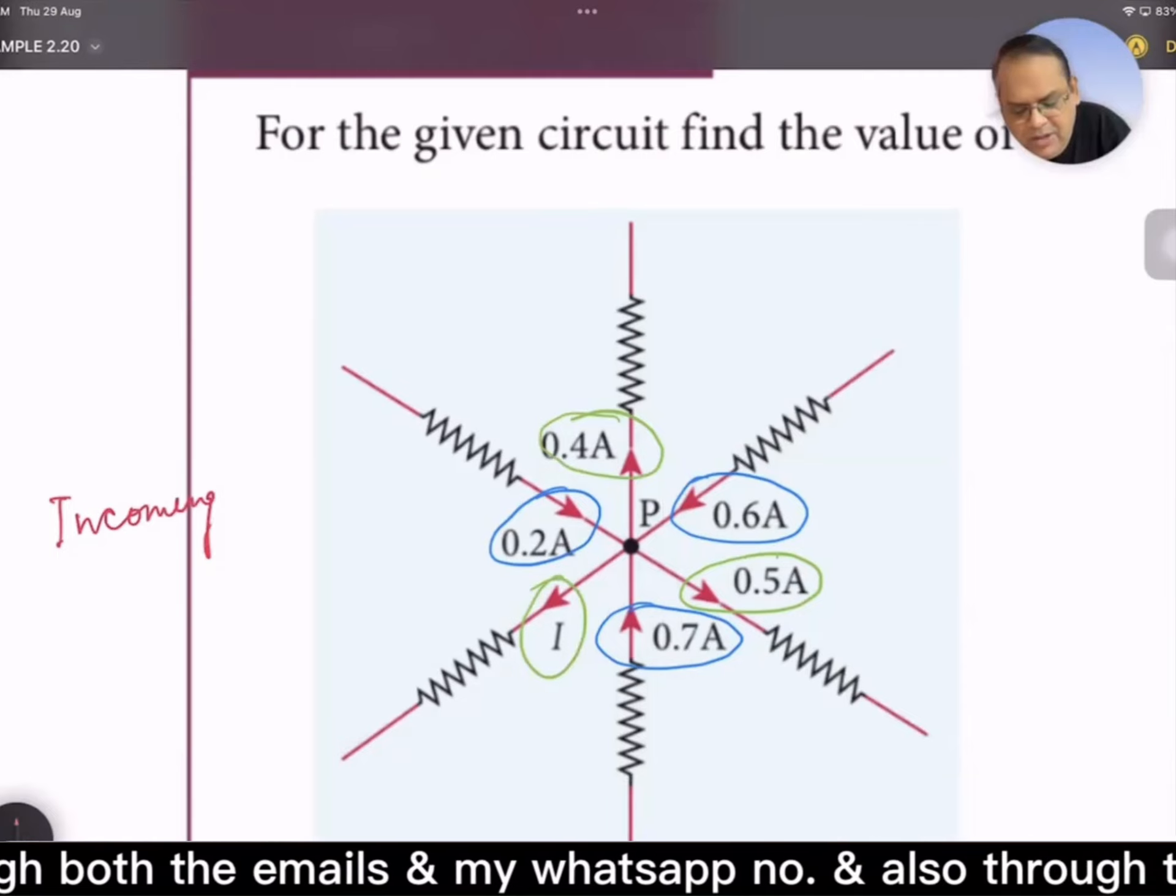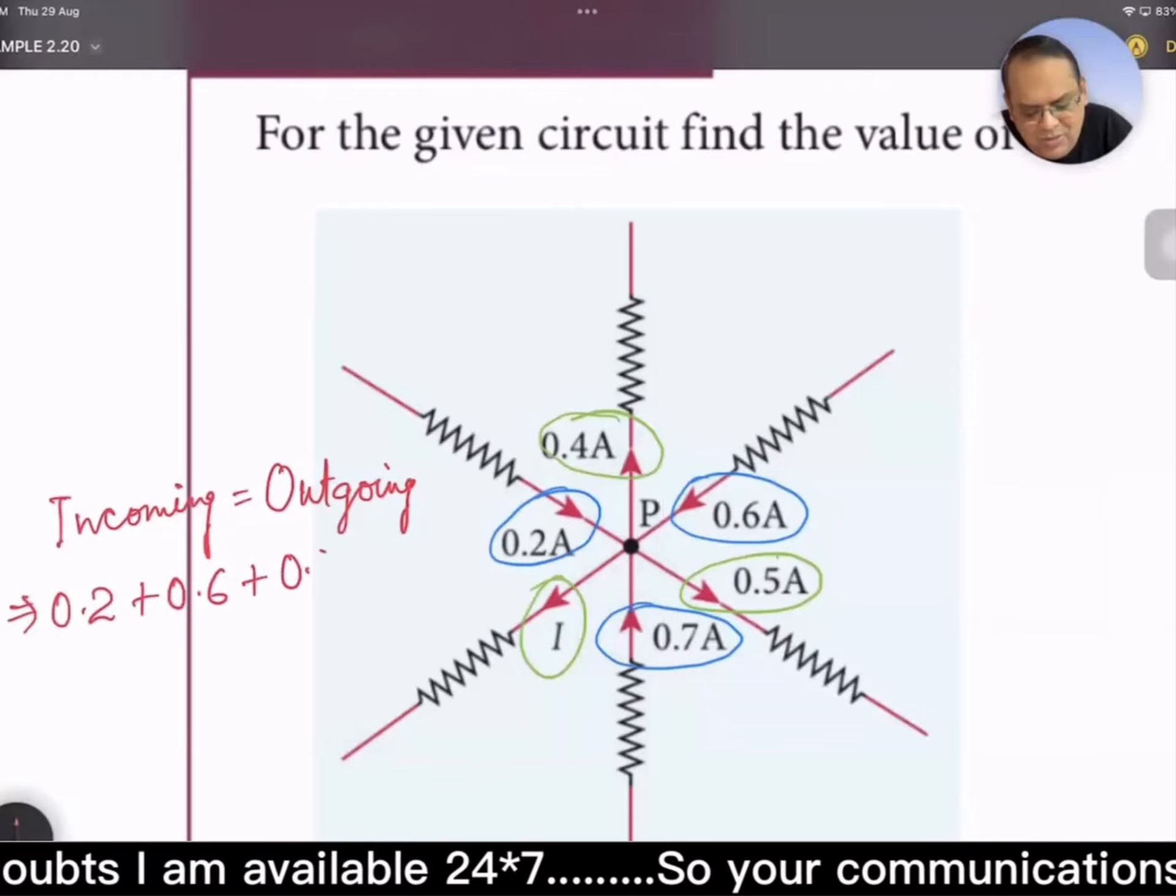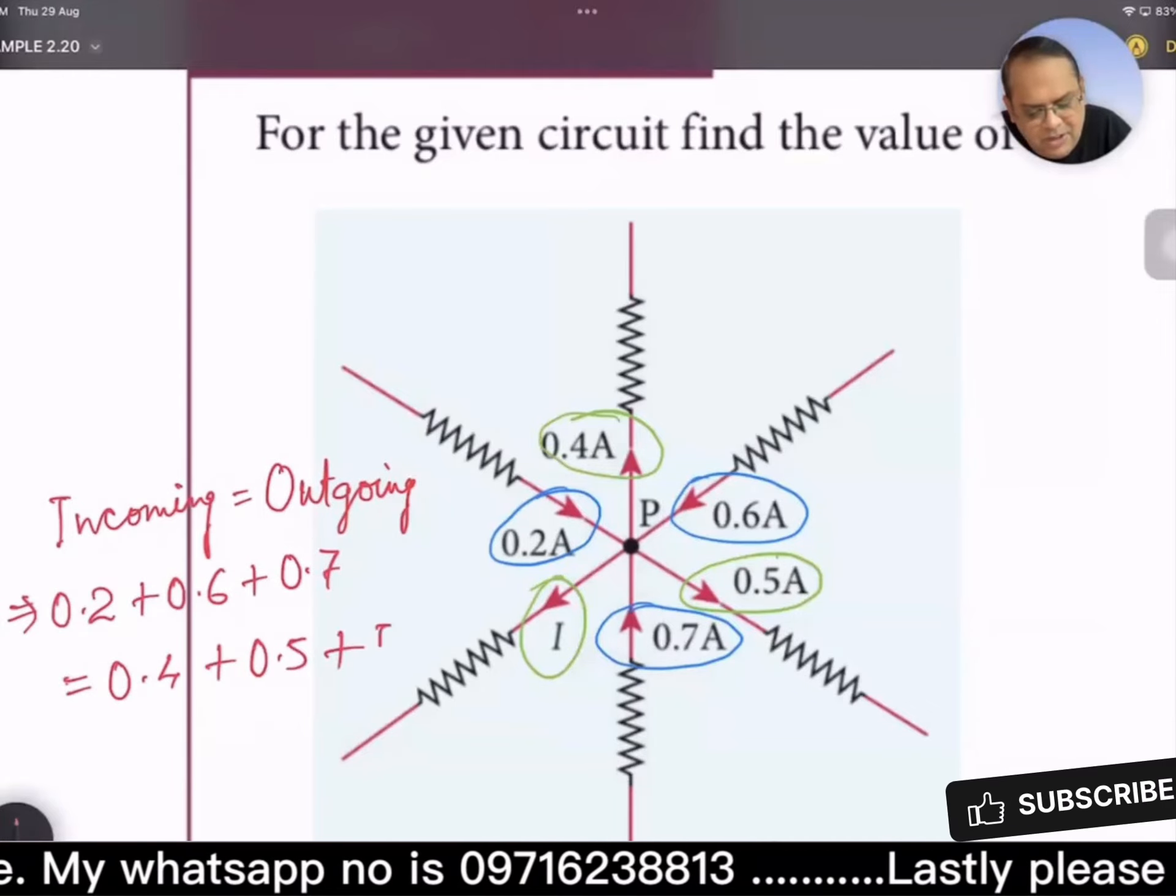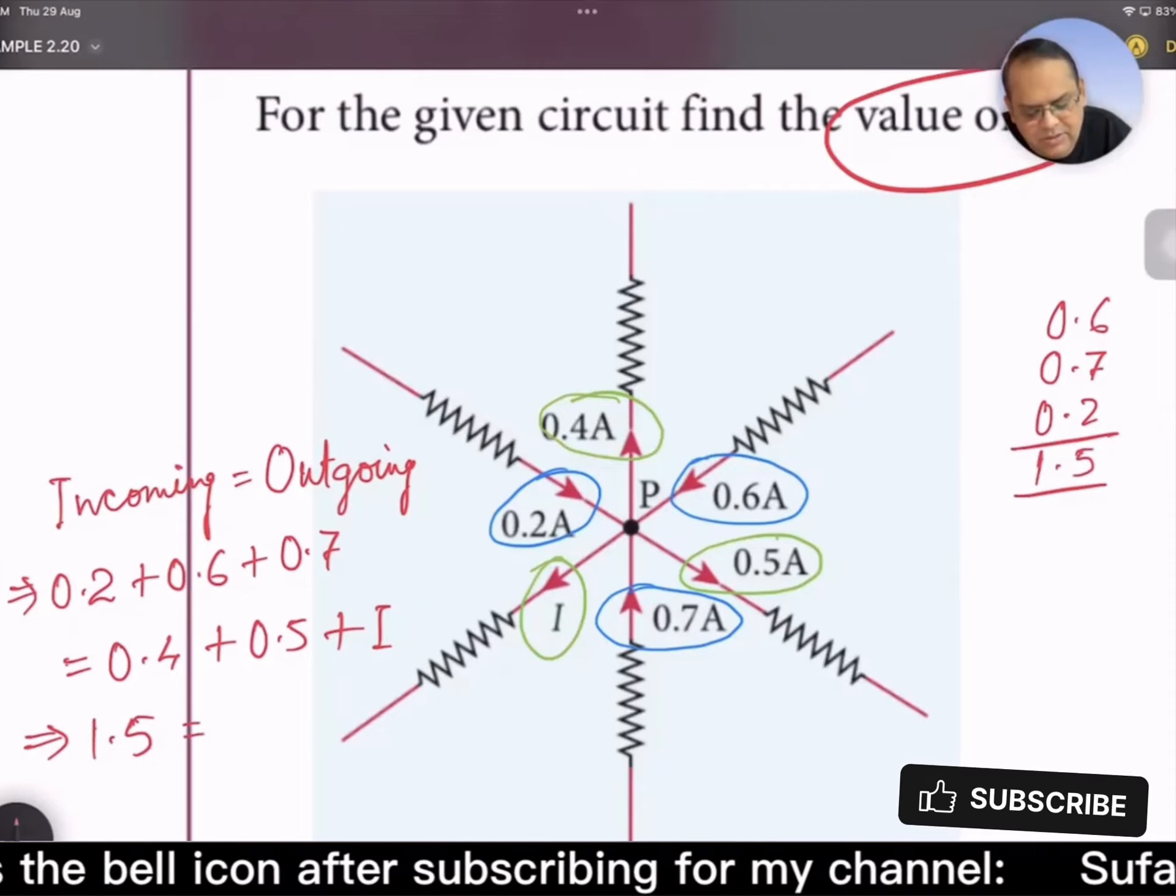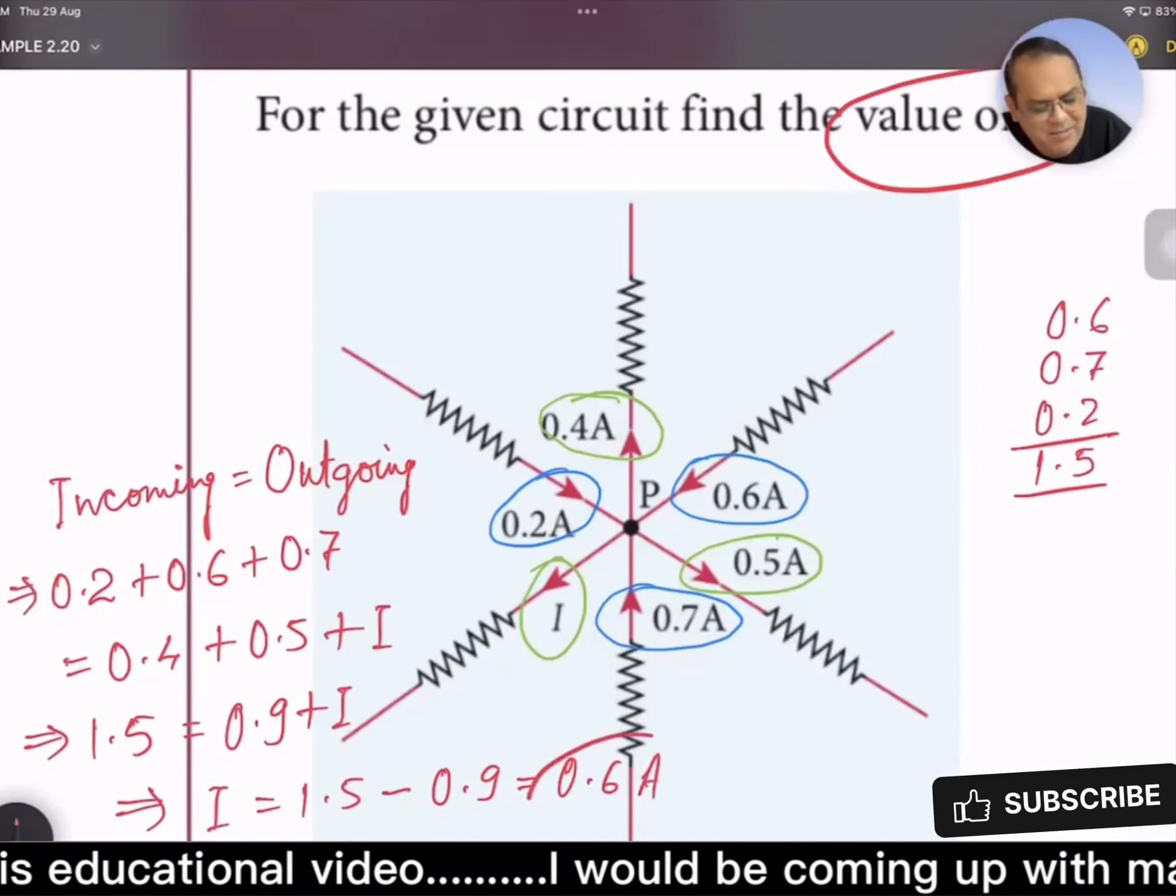Incoming means 0.2 + 0.6 + 0.7 = 1.5. Outgoing: 0.4 + 0.5 + I, so 0.9 + I. Therefore 1.5 = 0.9 + I, which implies I = 1.5 - 0.9 = 0.6 ampere. This is the answer.